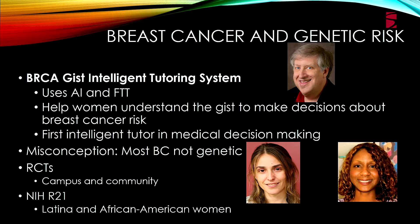In one intervention, we used artificial intelligence and fuzzy trace theory to convey how breast cancer and genetic risk are linked. Often people have the misconception that all breast cancer is genetic. In fact, the probability of it being genetic is very low in general, whereas if you have a genetic mutation, your probability of breast cancer is high. We managed to give people the correct gist through randomized trials on campus and in the community, now extending to diverse audiences.